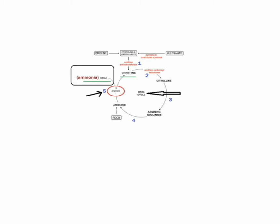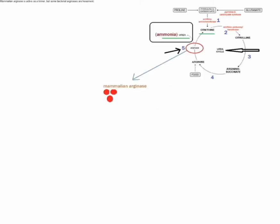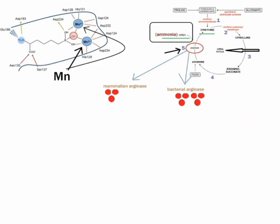Mammalian arginase is active as a trimer, but some bacterial arginases are hexameric. The enzyme requires a two-molecule metal cluster of manganese in order to maintain proper function. These manganese ions coordinate with water, orienting and stabilizing the molecule and allowing water to act as a nucleophile and attack L-arginine, hydrolyzing it into ornithine and urea.